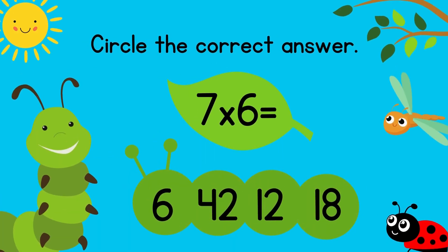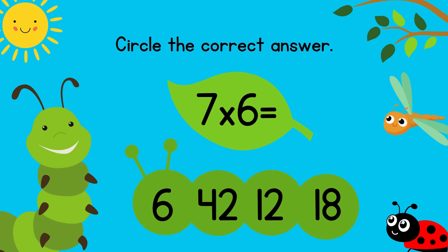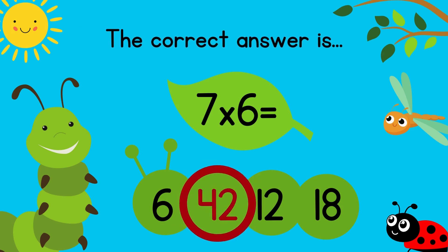Circle the correct answer: 7 times 6 equals? The correct answer is 42. Excellent!